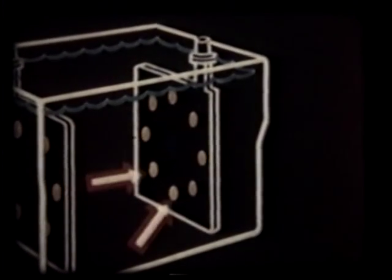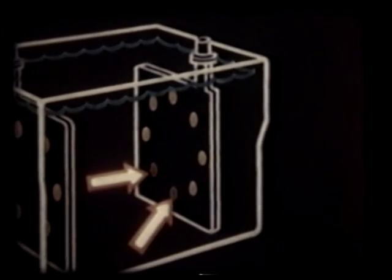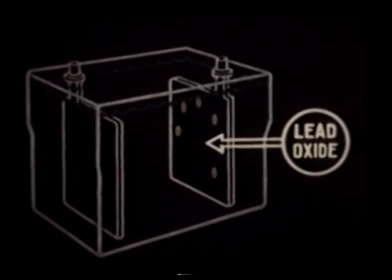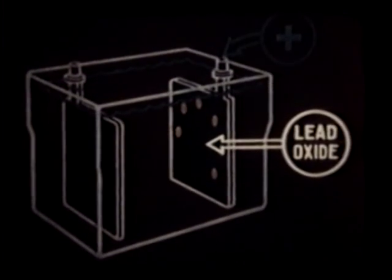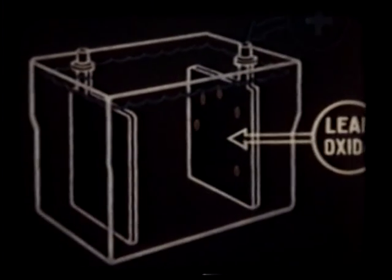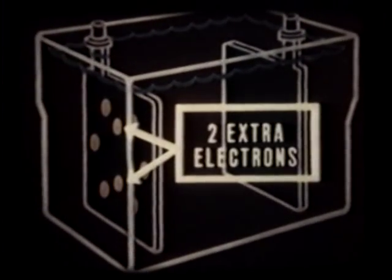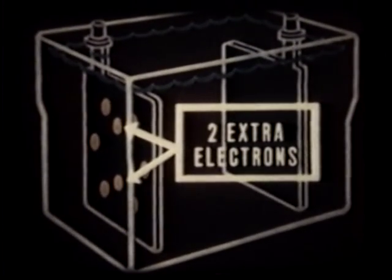The acid breaks down the lead oxide and the atoms in the plate lose two electrons. When an atom lacks its full quota of electrons, it tends to attract them from elsewhere. In this condition, the atom is positive. Thus the lead oxide plate becomes the positive end of our battery. Meanwhile, the acid has built up the lead until each atom has gained two electrons. When an atom has more electrons than it needs, it tends to repel the extra ones. In this situation, the atom is negative, and so the lead plate becomes the negative end of our battery.